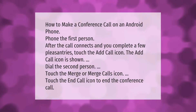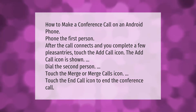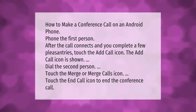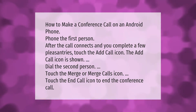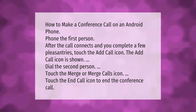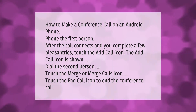How to make a conference call on an Android phone: phone the first person. After the call connects and you exchange a few pleasantries, touch the Add Call icon. Dial the second person, then touch the Merge or Merge Calls icon. Touch the End Call icon to end the conference call.